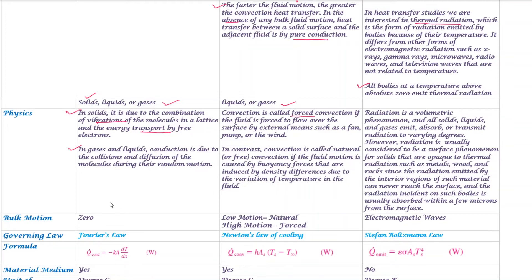Convection heat transfer has two types: forced convection and natural convection. Forced convection is when the fluid motion is induced externally — for example, if we use a fan or wind to cause the flow. That is forced convection. Natural convection is free convection due to temperature difference causing density variation, which creates a buoyancy force. That is natural convection.